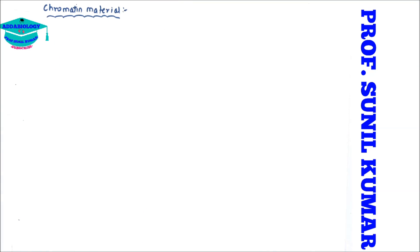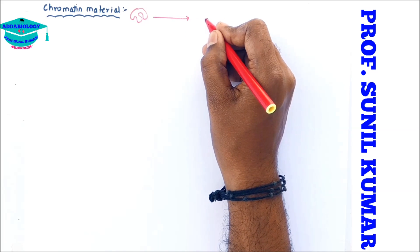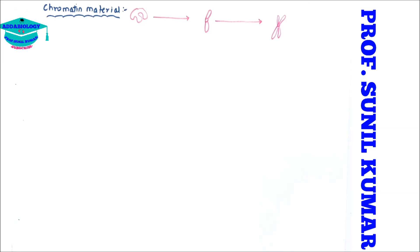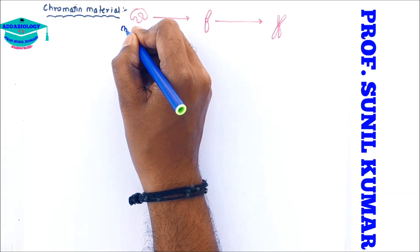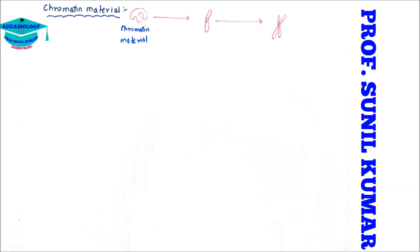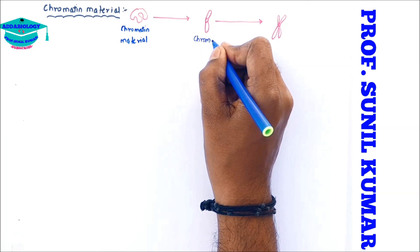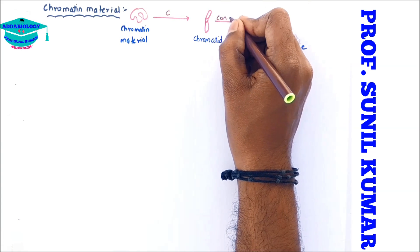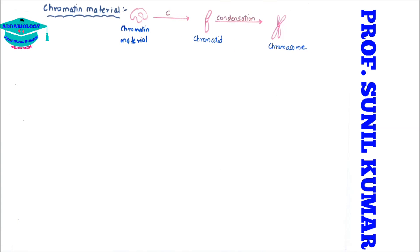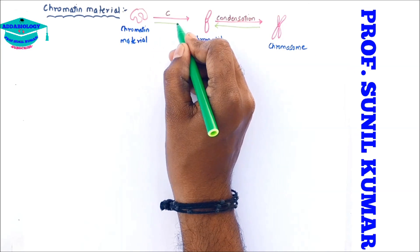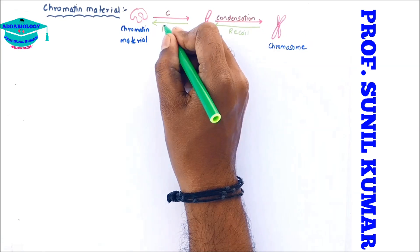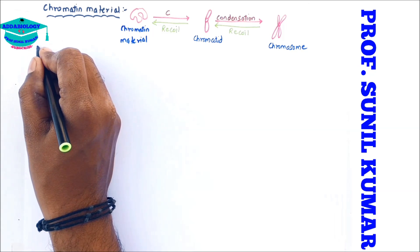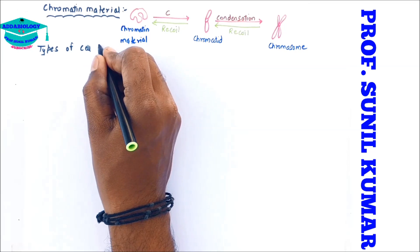Chromatin material undergoes condensation to form chromatids, and chromatids condense further to form chromosomes. If a chromosome recoils, it forms a chromatid, which further recoils back to chromatin material. Remember these terms: chromatin material → chromatid → chromosome.